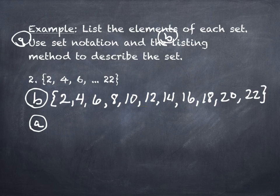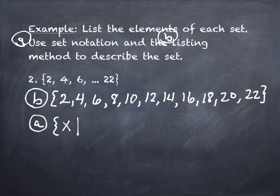For the set builder notation, what do I start with? Curly braces. What's next? Always some variable — we tend to use X the most — and a vertical bar. So it always looks like: curly brace, a variable, a letter, and then the bar. After that, we have to describe everything about this set clearly. For instance, the number 7 is not in this set, and 0 is not in this set, so I have to describe the set in a way that eliminates those possibilities.